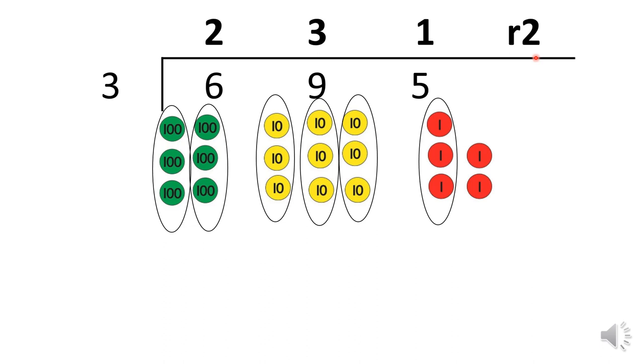Therefore, 695 divided by three is 231, remainder two.